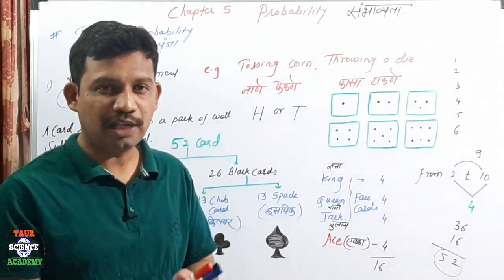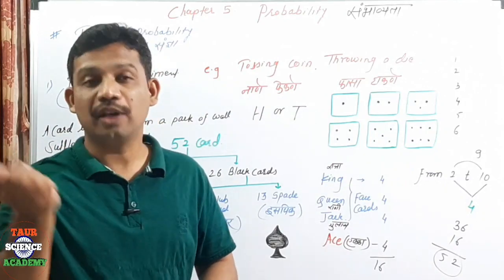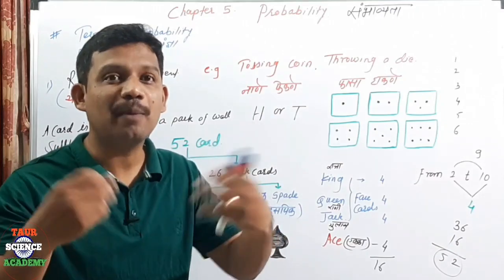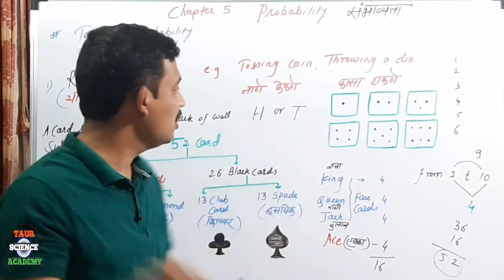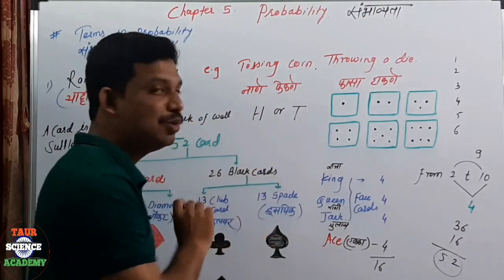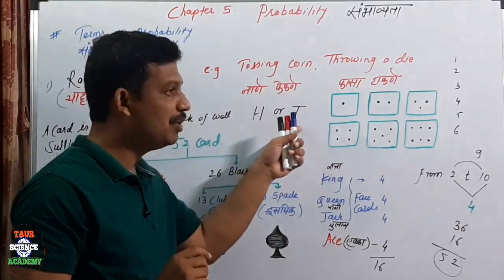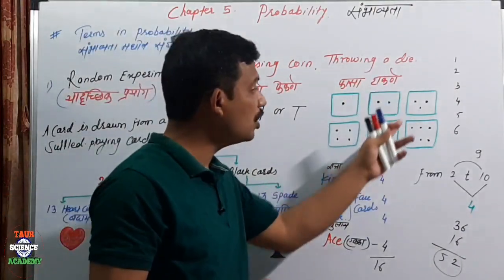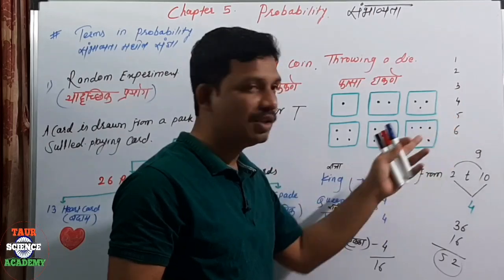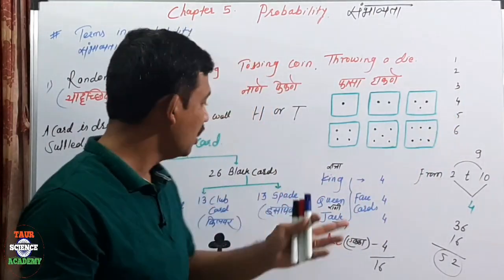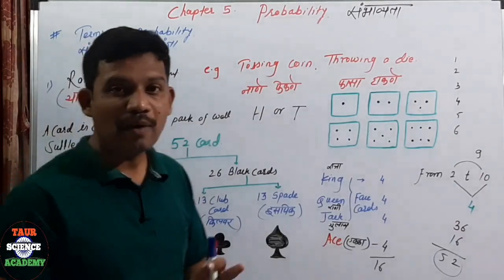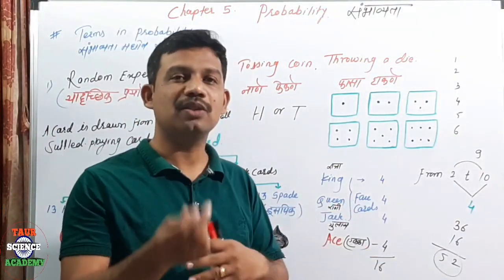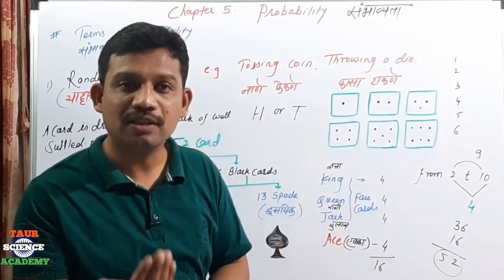These possibilities are called outcomes. Outcomes means the result. For tossing a coin — there are two outcomes: head or tail. For throwing a die — there are 6 outcomes: 1, 2, 3, 4, 5, 6. For drawing one card from 52 playing cards — there are 52 outcomes. Outcomes is the result of the experiment.